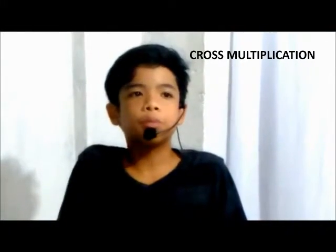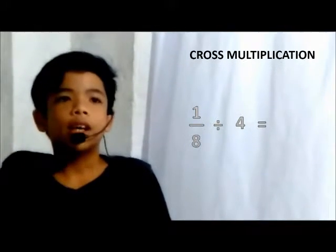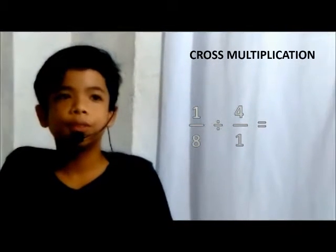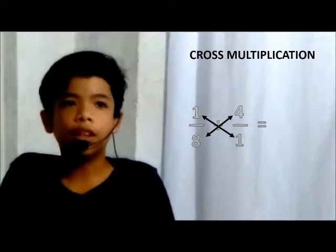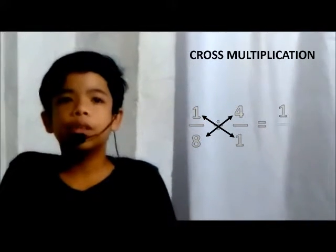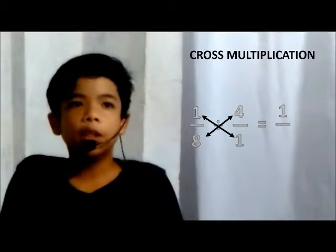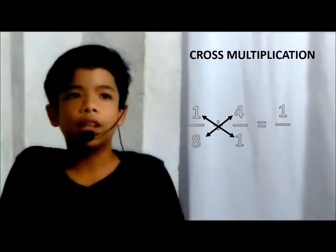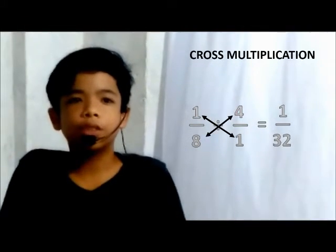Let's try this using cross multiplication. Again, we know that a whole number has a denominator of 1. Put an imaginary cross between our fractions. We multiply the numerator, 1, to the denominator of the other fraction, which is 1 — the answer is 1, and this will be the numerator of our answer. Next, we multiply the denominator, 8, to the numerator of the other fraction, which is 4 — the answer is 32, and this will be the denominator. So our final answer is 1 over 32.